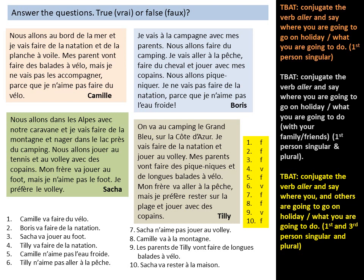Number six: Tilly doesn't like fishing — that is true. Mon frère va aller à la pêche, mais je préfère — my brother is going to go fishing, but she prefers staying on the beach. Number seven: Sasha doesn't like playing volleyball — that is false. It says je préfère le volley. Number eight: Camille is going to go to the mountains — false. Nous allons au bord de la mer — they're going to the seaside.